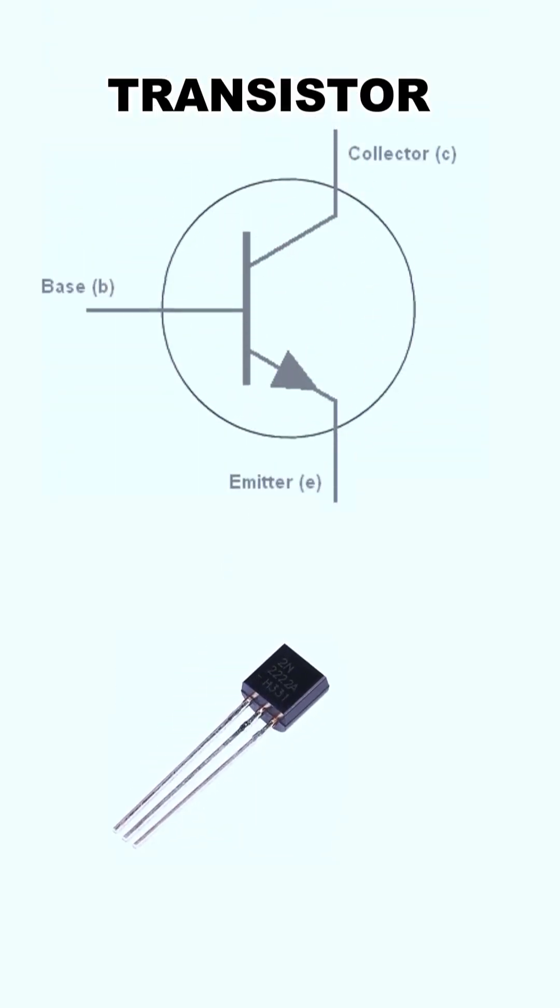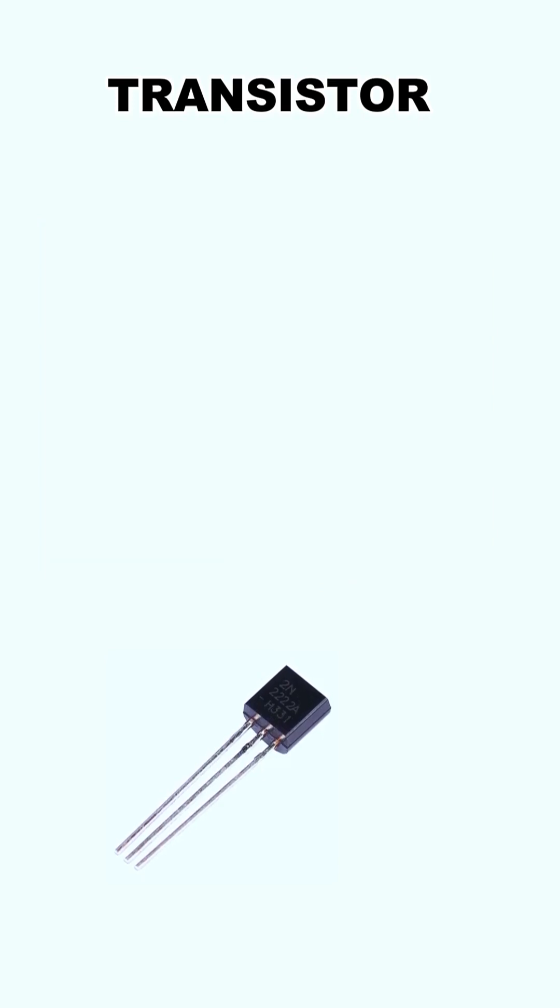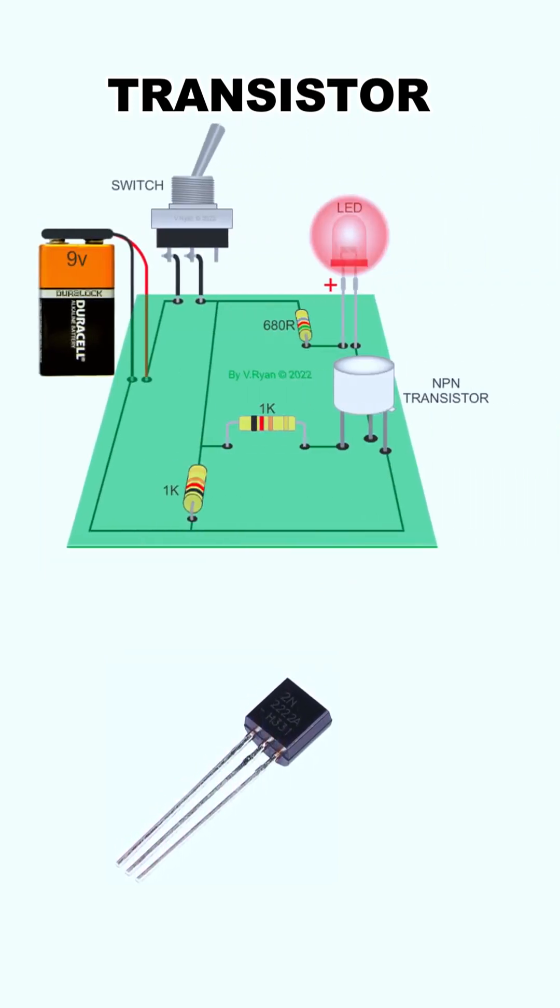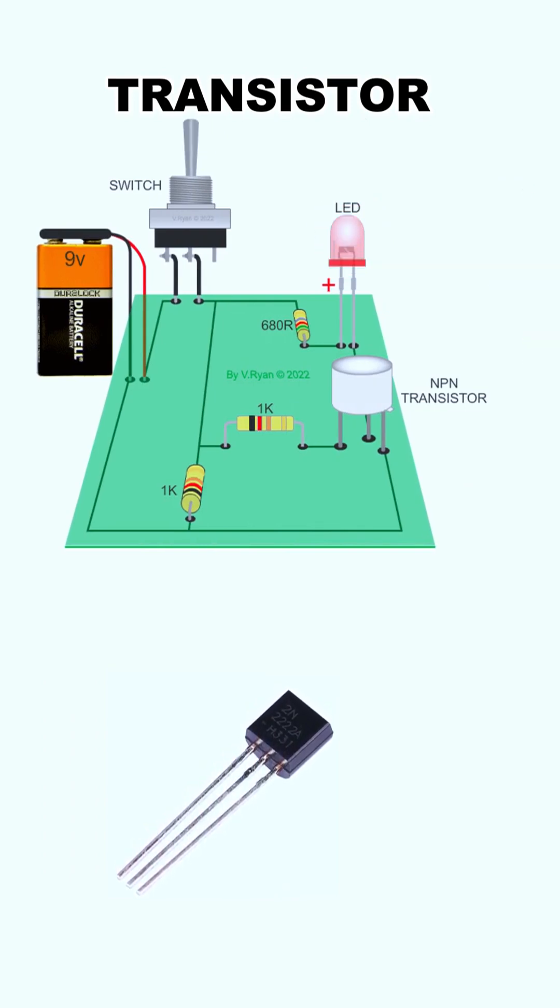It is very important for a student, a hobbyist, and an electronics engineer to understand what a transistor is. So what is a transistor? A transistor is an electronic component used in circuits to either amplify or switch electrical signals or power, allowing it to be used in a wide array of electronic devices.